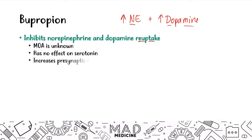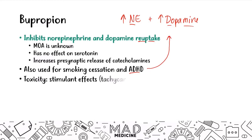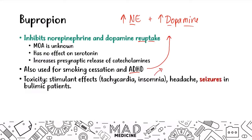Bupropion also increases the presynaptic release of catecholamines. It's also used for smoking cessation and ADHD — specifically ADHD because it has the same net effect as CNS stimulants like amphetamines, increasing norepinephrine and dopamine. Rather than increasing release, it prevents reuptake, leading to more norepinephrine and dopamine in the synaptic cleft. Toxicity is similar to stimulants: tachycardia, insomnia, weight loss due to decreased appetite, and headache.